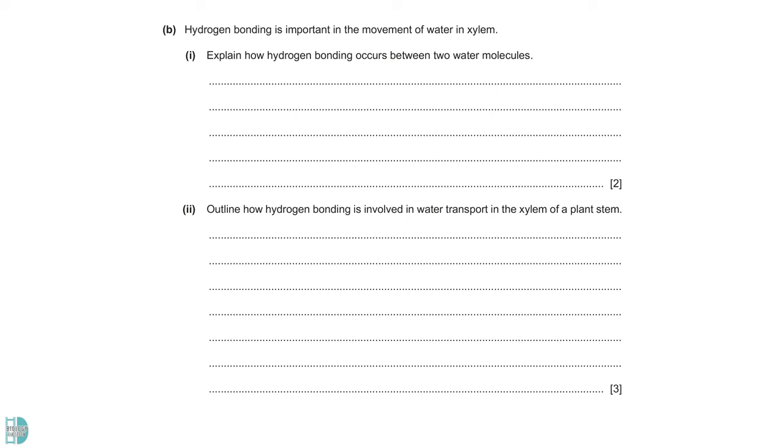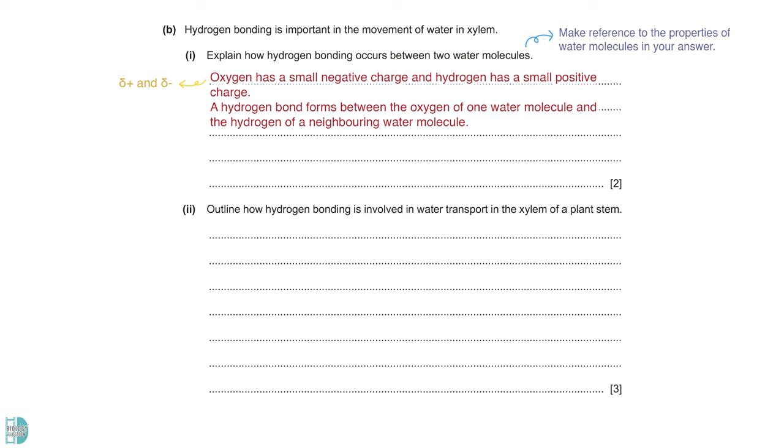B talks about hydrogen bonding. Explain how hydrogen bonding occurs between two water molecules. To answer this question, you must use the properties of water molecules. The oxygen atom in the water molecule has a small negative charge. And hydrogen has a small positive charge. We call this delta plus and delta minus. Due to the small charge, a hydrogen bond can form between the oxygen of one water molecule and the hydrogen of a neighboring water molecule. Oxygen is more electronegative than hydrogen.